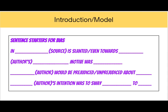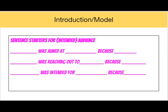Or the author, again the author's name, their motive or motivation was blank. Say why. Again, say the author's name would be prejudiced or unprejudiced or sort of prejudiced or not prejudiced about whatever, because... Next step: also author's intention was to sway or convince someone to do blank, and then you're going to say why. These are the different ways you're going to start.